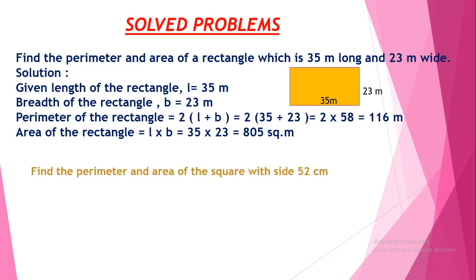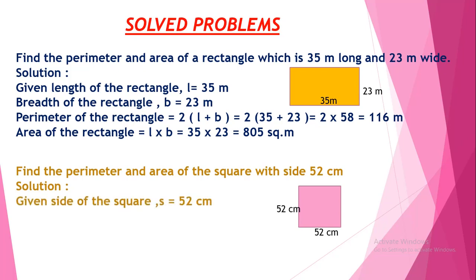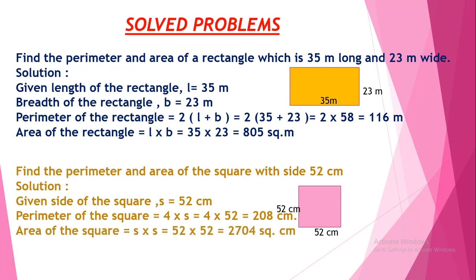Next question: find the perimeter and area of a square with side 52 centimeters. Perimeter = 4 × side = 4 × 52 = 208 centimeters. Area = S × S = 52 × 52 = 2704 square centimeters. Note the units: perimeter is in centimeters and area is in square centimeters.